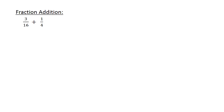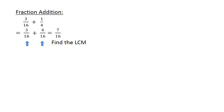Fraction addition: 3 over 16 plus 1 over 4. First you have to find the lowest common multiple. 1 over 4 is now equal to 4 over 16. So 3 over 16 plus 4 over 16 equals 7 over 16.